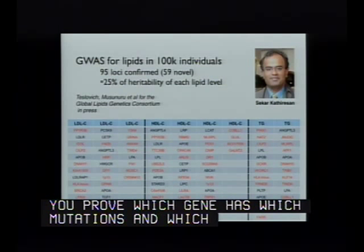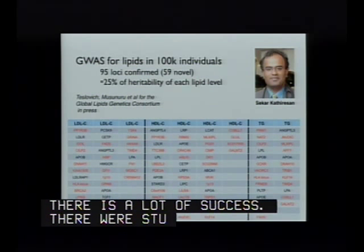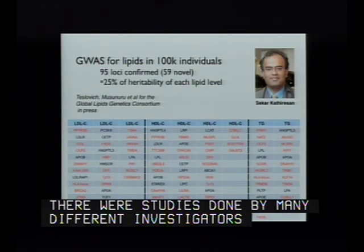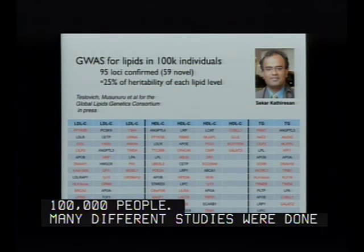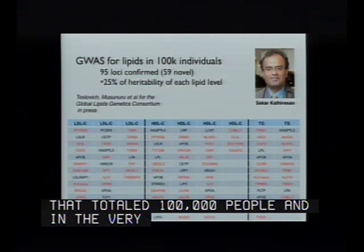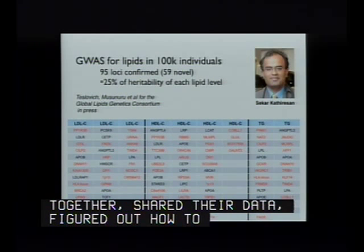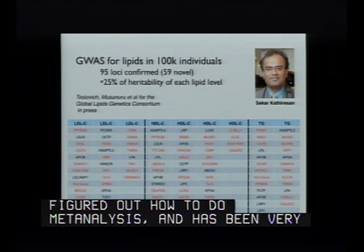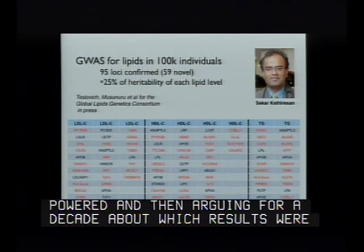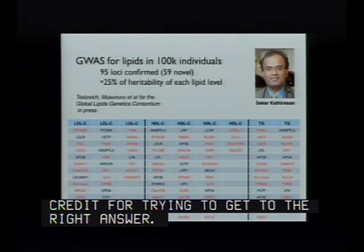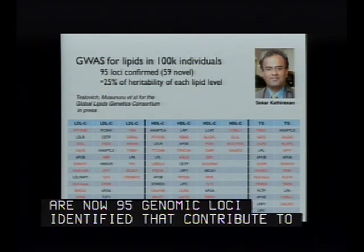Lipids is another set of traits with great success. Genome-wide association studies were done by many different investigators studying lipids. It's not that people went out and did large studies of 100,000 people—it's that many different studies were done that totaled 100,000 people. In a very unusual form of international collaboration, everyone rapidly came together, shared their data, figured out how to do valid meta-analyses, and has rapidly gotten to the answers, rather than publishing 30 underpowered papers and arguing for a decade. We now have 95 genomic loci identified contributing to either HDL, LDL, triglyceride levels, or some combination.